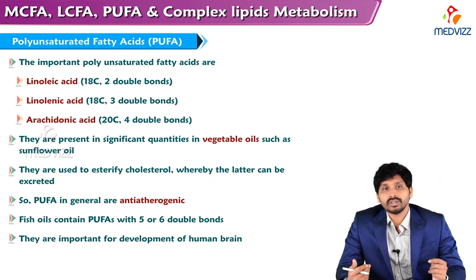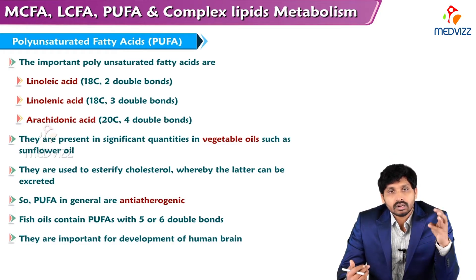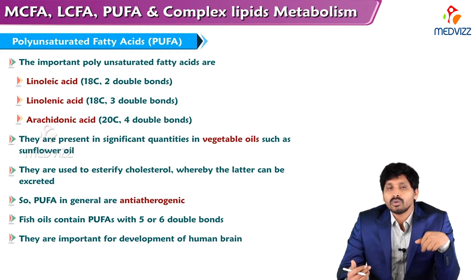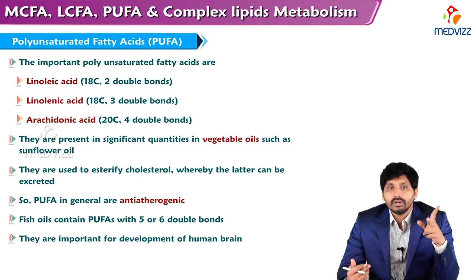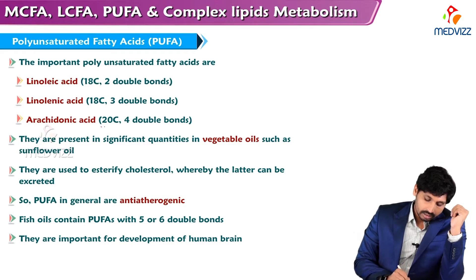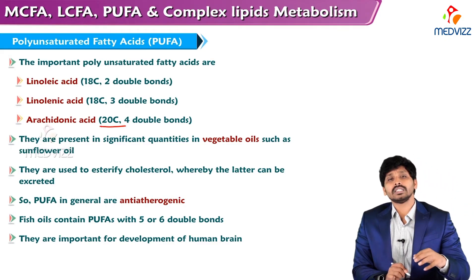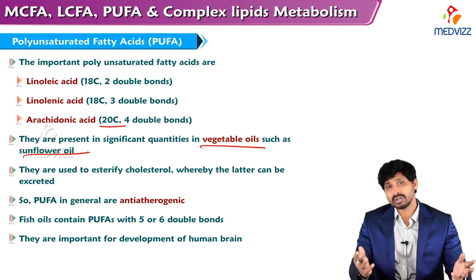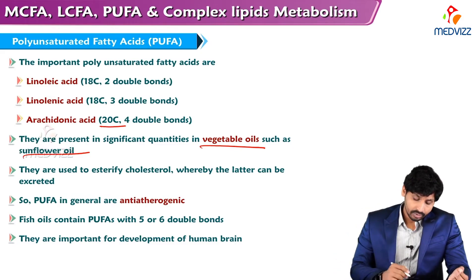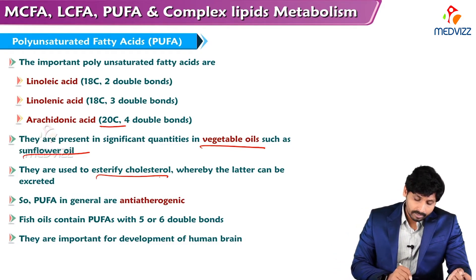Coming to polyunsaturated fatty acids: the important ones are linoleic acid, linolenic acid, and arachidonic acid. Linoleic and linolenic acid are both 18-carbon compounds and both are unsaturated; they differ in the number of double bonds — linoleic acid has two double bonds and linolenic acid has three double bonds. Arachidonic acid is a 20-carbon compound with four double bonds. They are present in significant quantities in vegetable oils such as sunflower oil, cottonseed oil, and groundnut oil, and are used for esterification of cholesterol.